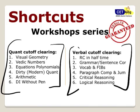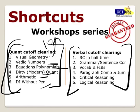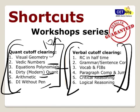There are 6 shortcut workshops for quant and 6 for verbal available in our online program. Six workshops doesn't mean only six videos — geometry alone contains more than 10 videos. The quant workshops cover numbers, polynomial equations, quant functions/graphs/inequalities, arithmetic, and DI without pen. For verbal, there are 6 workshops — for example, para jumbles has 8 types of questions. If you know the strategies for those 8 types, it is more than sufficient to crack the exam.